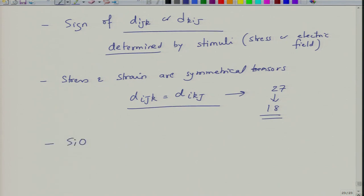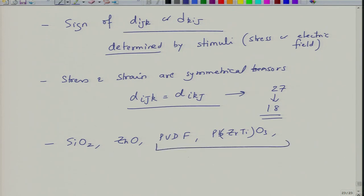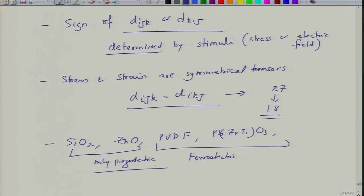Examples of piezoelectric materials include silicon dioxide (quartz), zinc oxide, PVDF (polyvinylidene fluoride), and lead zirconate titanate (PbZr_x Ti_{1-x} O_3). Among these, lead zirconate titanate and PVDF are also ferroelectric materials, and are necessarily piezoelectric. Quartz watches use the piezoelectric effect, and silicon dioxide (quartz) is the piezoelectric component used in them.